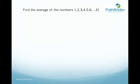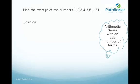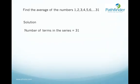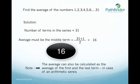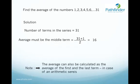We need to find the average of the first 31 natural numbers. This is an arithmetic series since each number is one more than the previous number. There are 31 numbers, which is an odd number, so the average equals the middle term. The middle term is the (31+1)/2 = 16th term, which equals 16. We can also find the average as the average of the first and last number: (1 + 31) / 2 = 16.